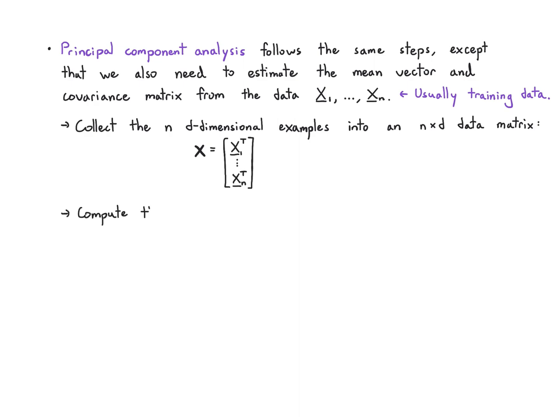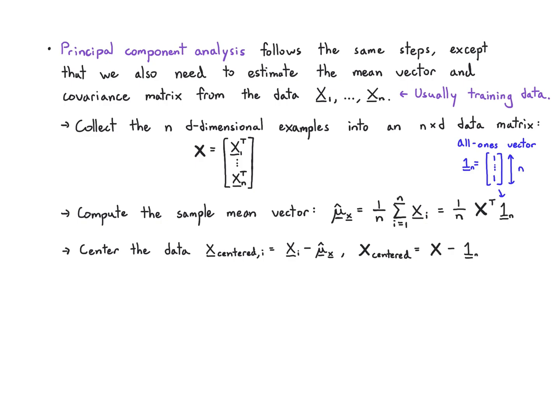What we're going to do is calculate the sample mean vector by summing up all those vectors and dividing by n, or multiplying this data matrix transpose times the all ones vector. Once we have that sample mean vector, we're going to center the data by subtracting it, and we can do that on the whole data matrix by using the all ones vector to copy that mean vector.